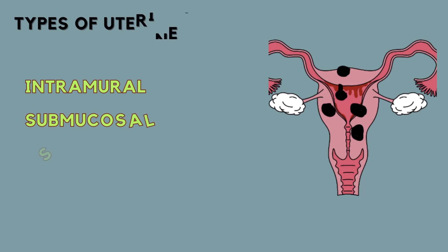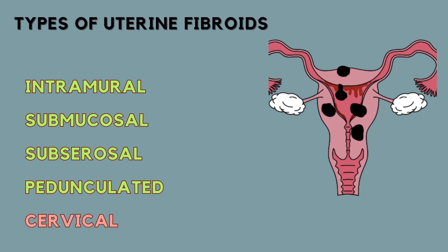Before discussing the types of fibroids, let us quickly revise the layers of the uterine wall. The outermost serous layer is the perimetrium. Next is the myometrium, which is the muscular layer of the uterine wall. The innermost layer is the endometrium.